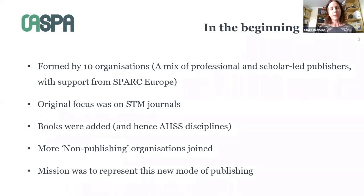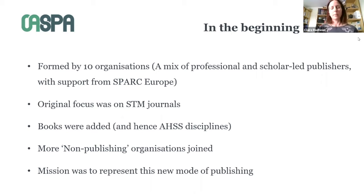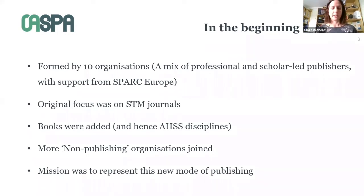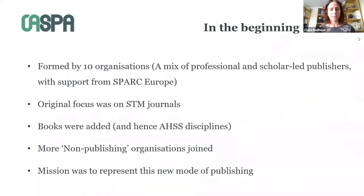The original focus was on STM journals, and as the organization began to grow, the member review process became critical and firm criteria for membership were developed. It wasn't long before open access books were added to the scope, and hence arts, humanities and social science disciplines were included as well. More non-publishing organizations joined — organizations providing services in open access, or libraries hosting journals but not being editorially responsible for those, for example.